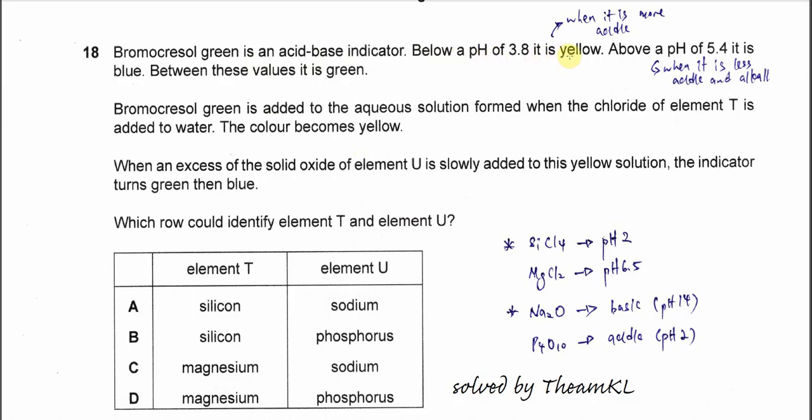So when it's more acidic it's yellow color. Above a pH of 5.4 it is blue. When the solution becomes less acidic and eventually alkaline we'll see the blue color, and between these values it will be green, a mixture of yellow and blue.